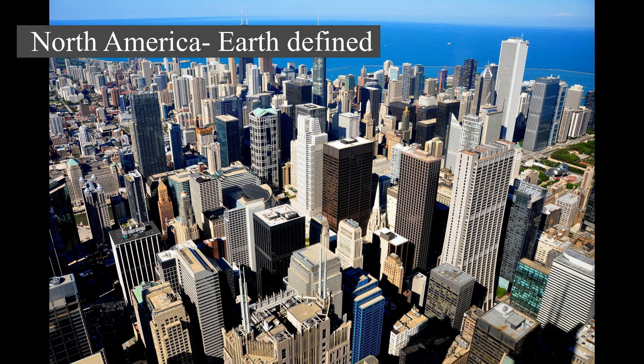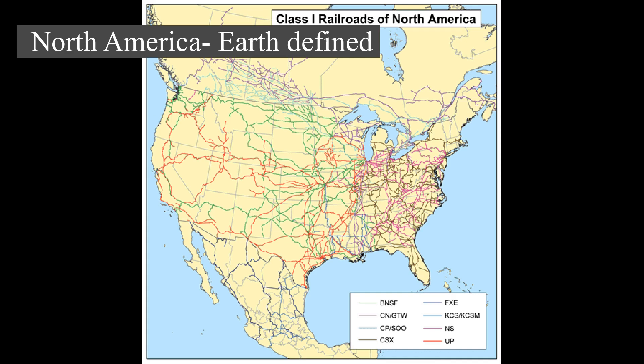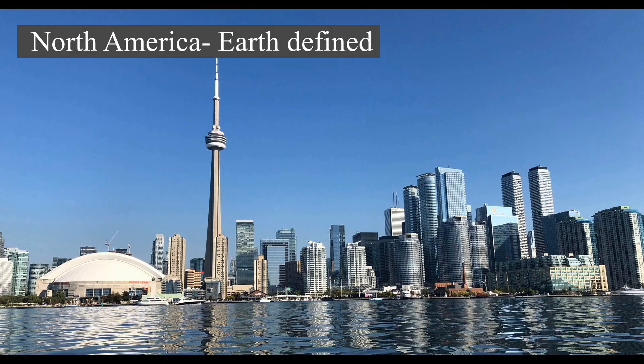North America covers an area of about 24,709,000 square kilometers (9,540,000 square miles), about 16.5 percent of Earth's land area, and about 4.8 percent of its total surface. North America is the third largest continent by area, following Asia and Africa, and the fourth by population after Asia, Africa, and Europe.